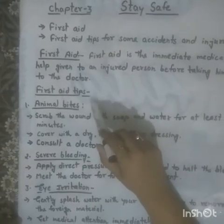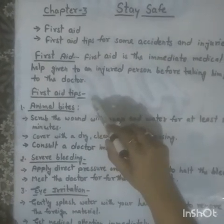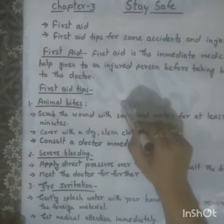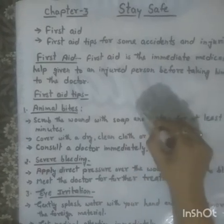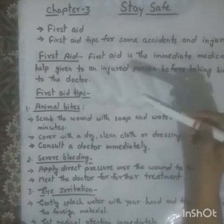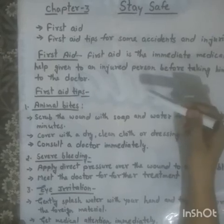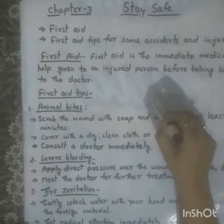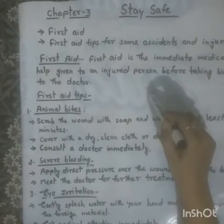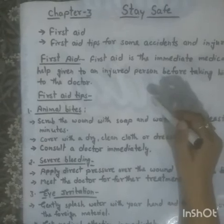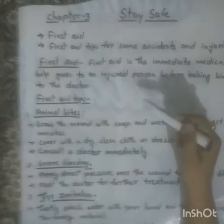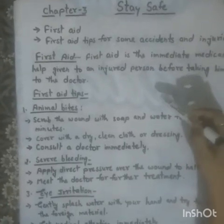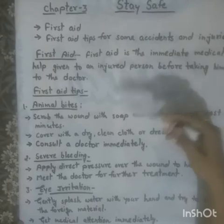The first one is animal bites. When any animal — mostly a cat, dog, bat, or any other animal — bites a person, this is called an animal bite. Animal bites need urgent medical attention. In addition to wound infection, there is a risk of serious disease such as rabies. Rabies is caused by the cut or bite of a dog.